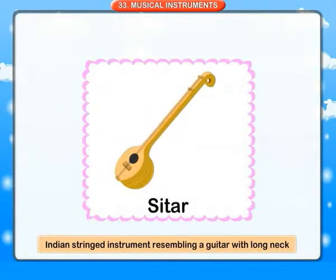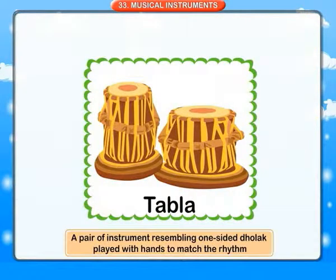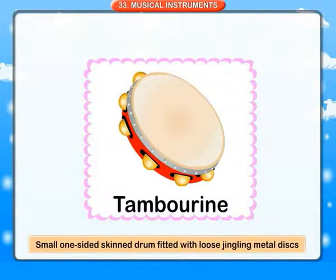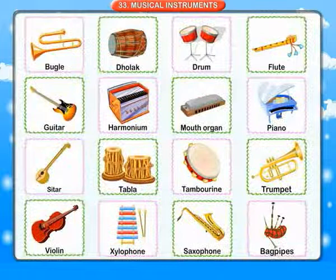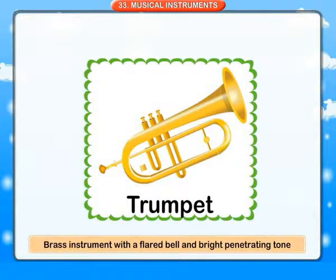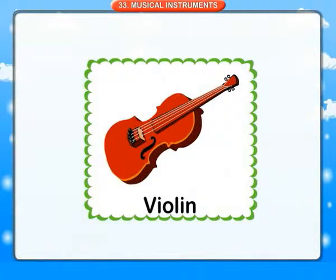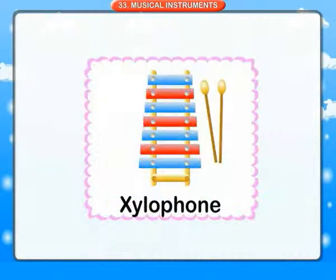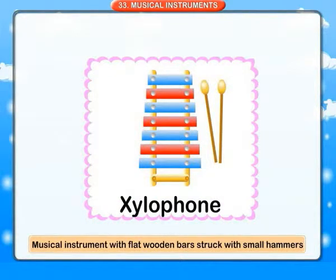Harmonium: a small bellows organ with a keyboard in which notes are produced by air pumped through metal reeds by means of pedals or fingers. Mouth organ: a small musical instrument played by passing it along the lips while blowing or sucking air. Piano: a musical instrument with strings struck by hammers operated by a keyboard. Sitar: an Indian stringed instrument resembling a guitar with a long neck. Tabla: a pair of instruments resembling one-sided dholak played with hands to match the rhythm.